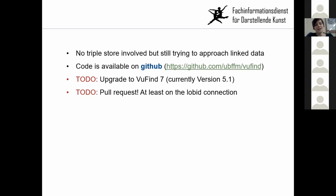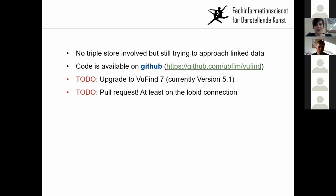In the last slide, there is no triple store involved or anything. We are reusing a lot of the features that VuFind already offers, and still trying to approach a linked data view on the perspective of different entities with some modularization. We are also using DC terms, as seen before in the other talk. The code is already available on GitHub, free for everyone to see — it's currently version 5.1, not the very recent version, but it might be worth a look if you're interested. I'm also committing myself here to do a pull request soon, at least for the lobid connection, since I saw in my research that this was something required by the community.